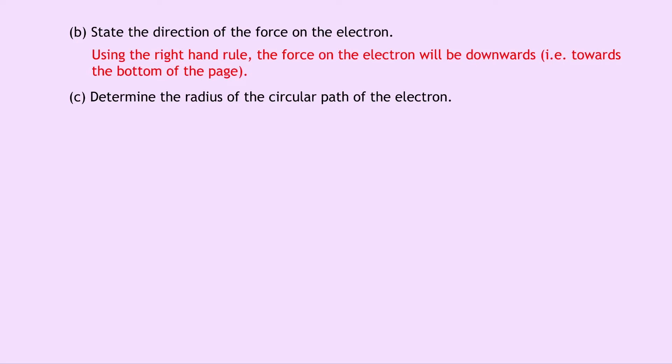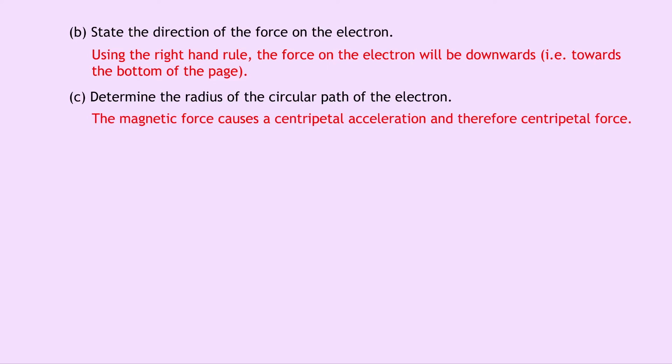Part C says to determine the radius of the circular path of the electron. Because the electron is moving perpendicular to the magnetic field, it will follow a circular path. The magnetic force causes a centripetal acceleration and therefore a centripetal force. This means we can equate the two forces: taking the magnetic force F equals QVB and the centripetal force F equals mv squared over R, we set them equal to get QVB equals mv squared over R.